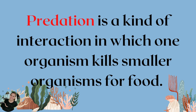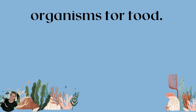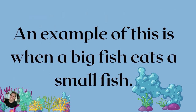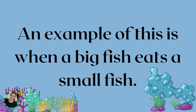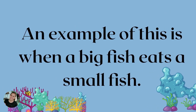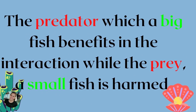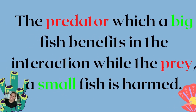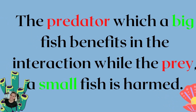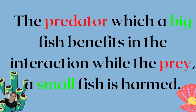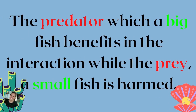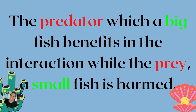The next one is predation. It is a kind of interaction in which one organism kills smaller organisms for food. For example, when a big fish eats a small fish — the predator, which is the big fish, benefits in the interaction, while the prey, the small fish, is harmed.